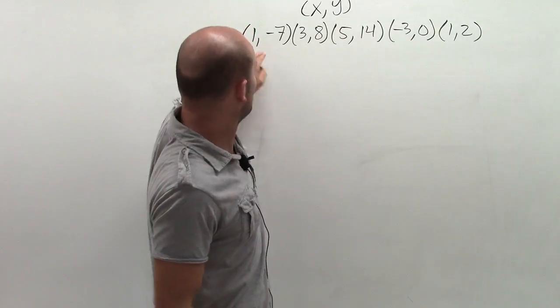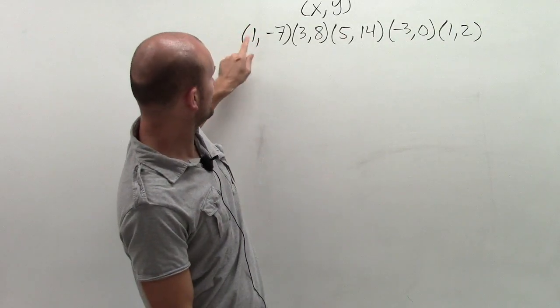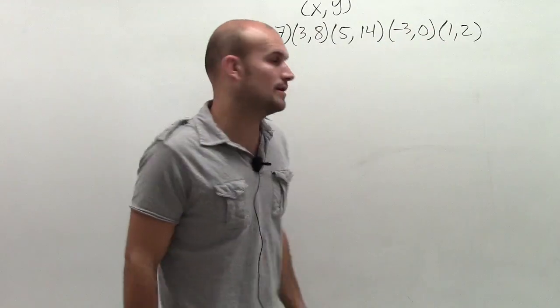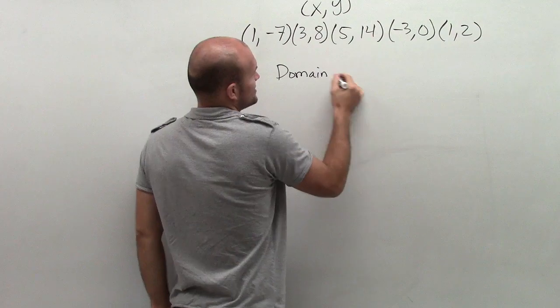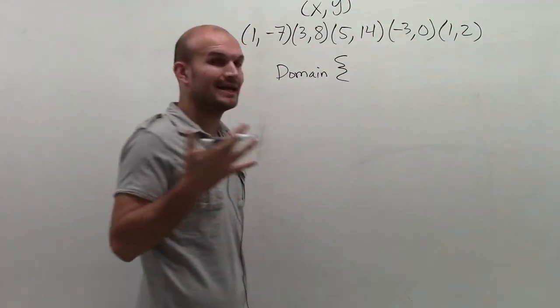So you can see my x-coordinates of each one of these ordered pairs are 1, 3, 5, negative 3, and 1. So remember, the domain relates to your x-coordinates, which is also what we call our input value.